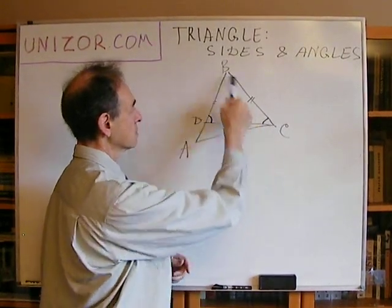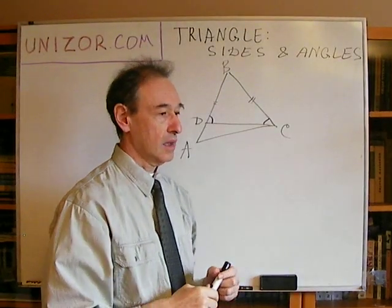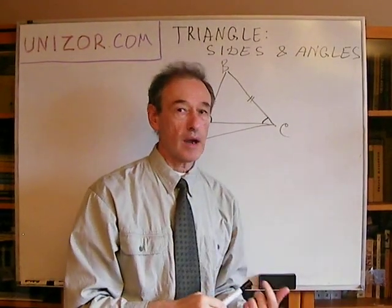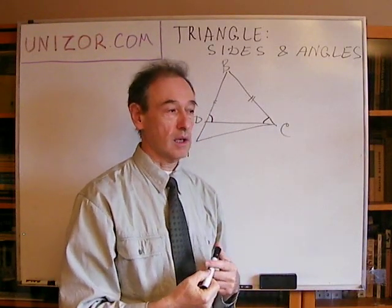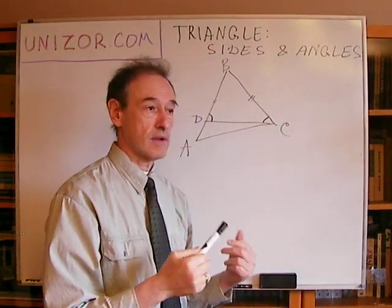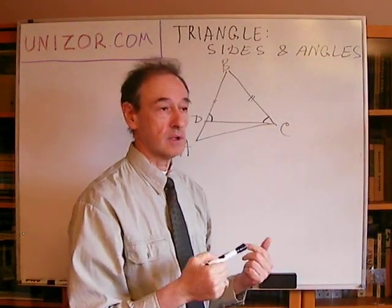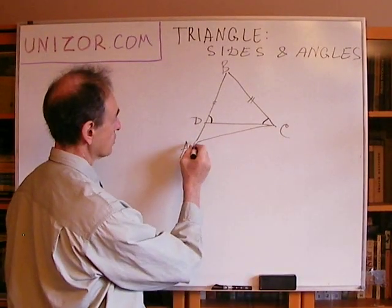The angle BDC is equal to BCD. Now, in one of the prior lectures, I was talking about exterior angles of a triangle, basically proving that exterior angle is greater than any interior, not supplemental to it.